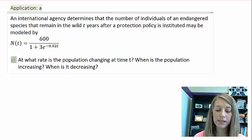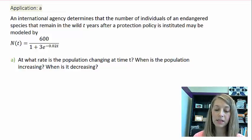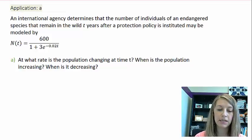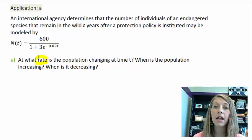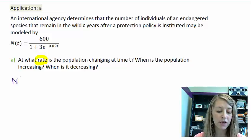So focusing on Part A, at what rate is the population changing at time t? Well, we see that code word there of rate, and we automatically know that rate means derivative. So our first job is to find the derivative of this function.